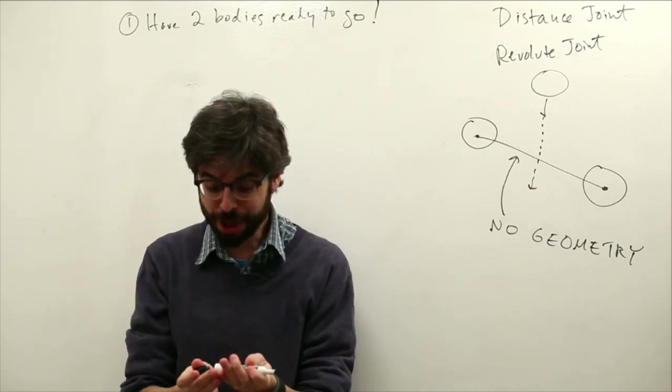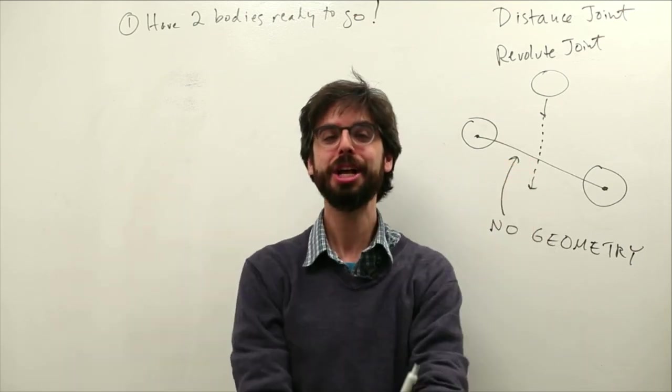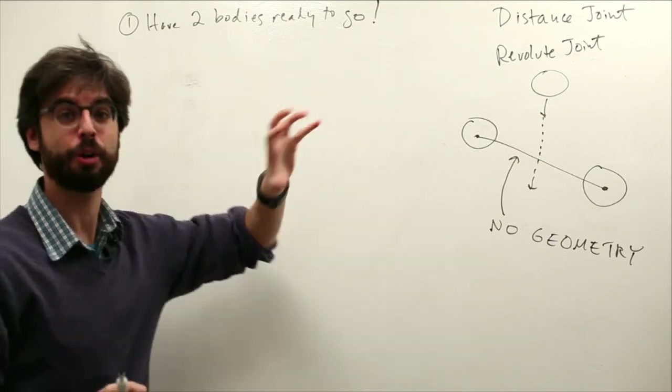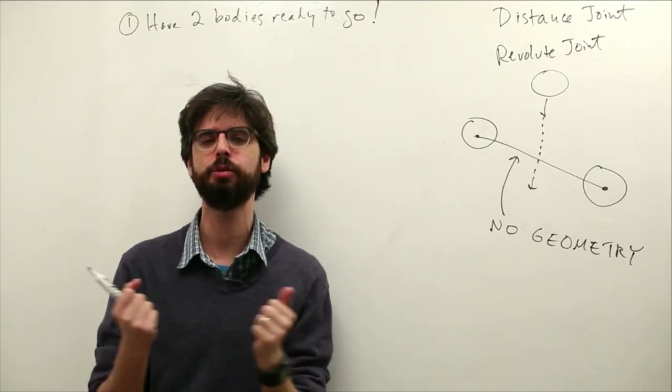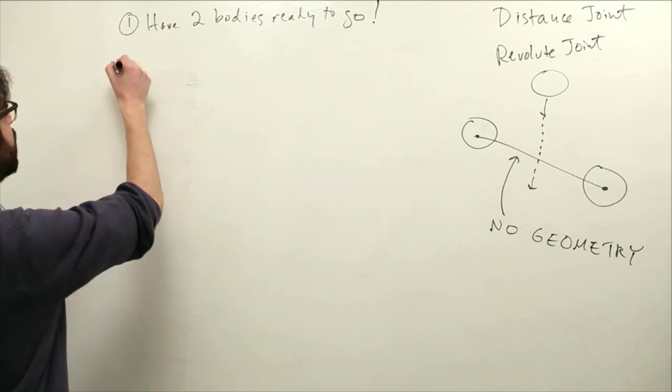So if you're going to make a joint, the point of a joint is that it connects two Box2D bodies. So before you even create the joint you should have variables that are referencing the two Box2D bodies that you want to connect. So once you have the two bodies ready to go.